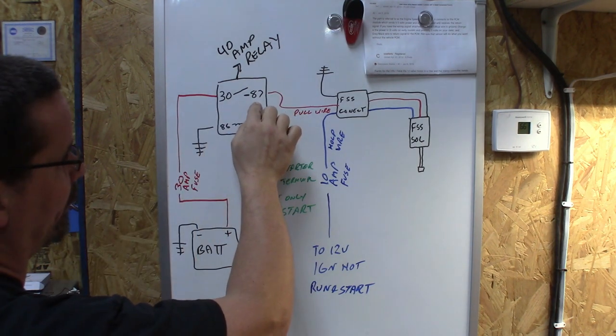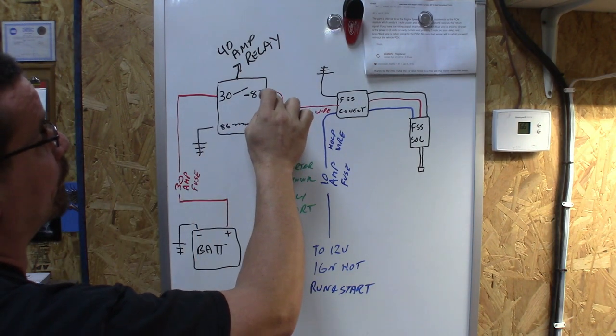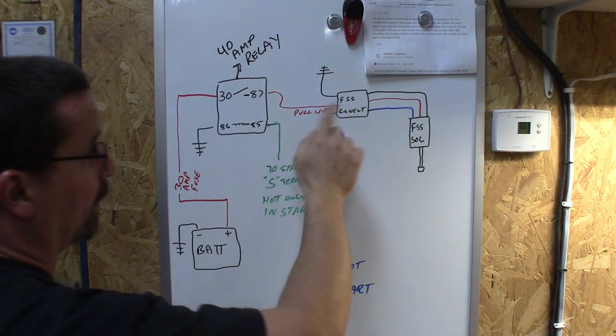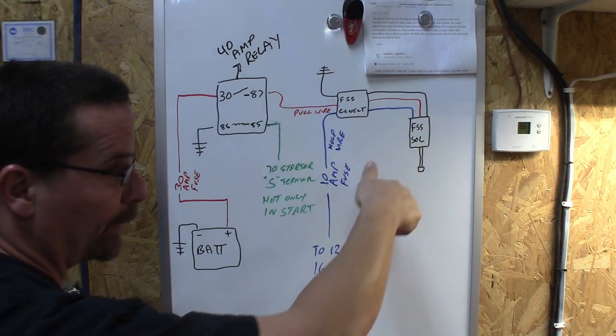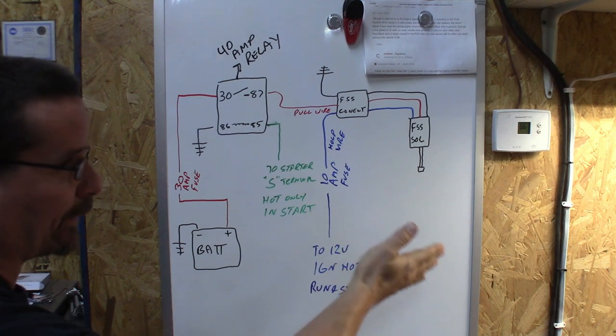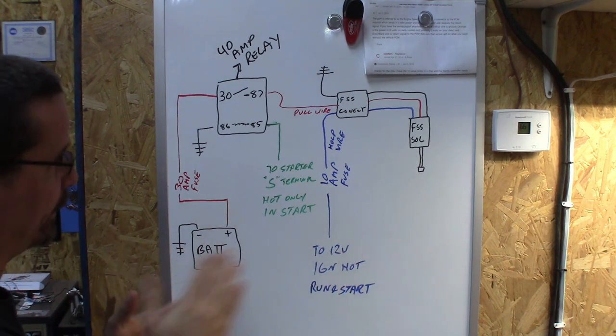Across from that will be terminal 87 that you will go to the middle terminal on your fuel shutoff connector. We've marked it red for illustration purposes. Your colors may vary depending on if it's a factory solenoid or an aftermarket. I've seen them with several different combinations.